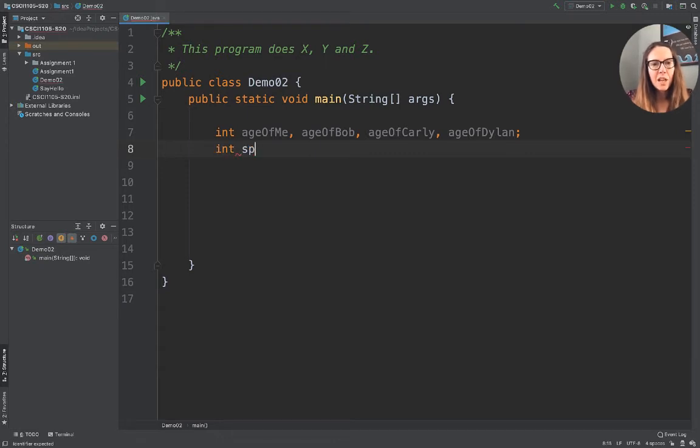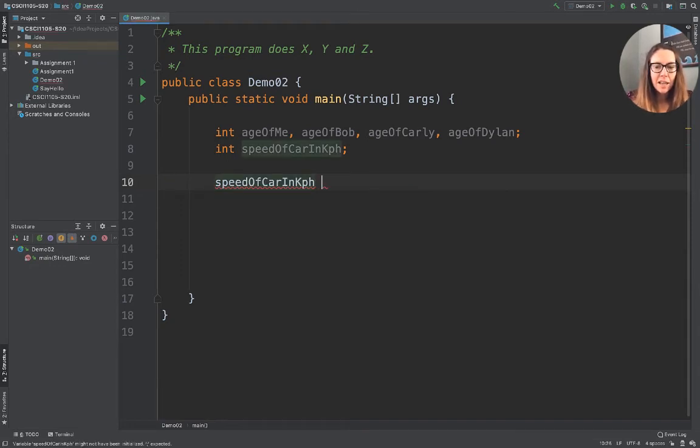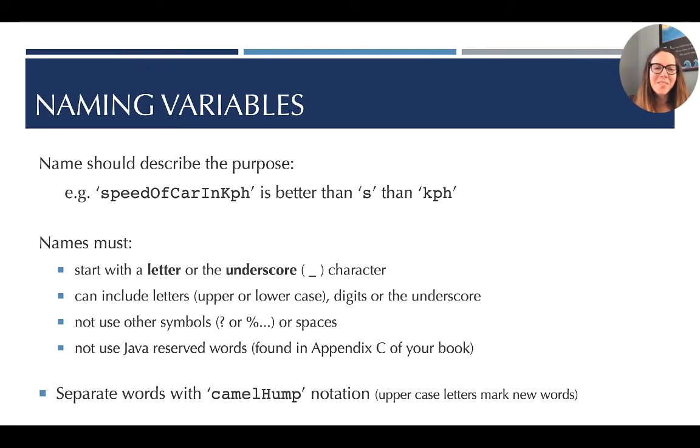We'll take a look real quick in IntelliJ. The first time you type speedOfCarInKPH, it takes you time to write it out. The next time, you can type the first couple letters, hit tab, and it's there. So there's no real added cost in typing that out, and there's real value in referring back to this later.